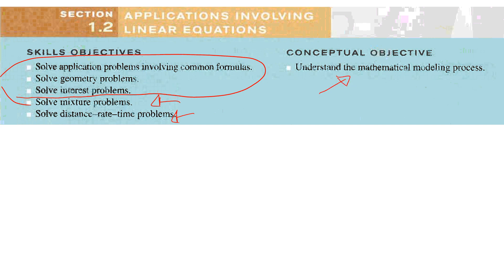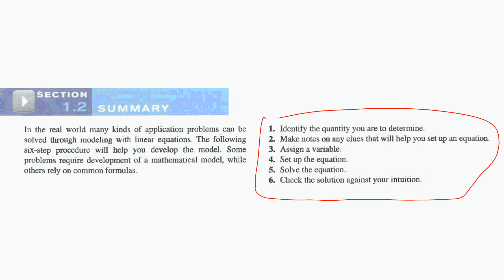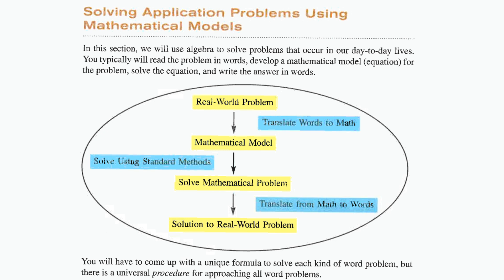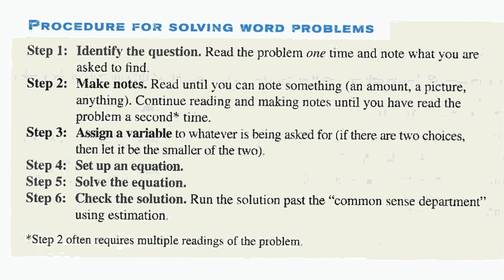We're going to focus on the mathematical modeling process. These six steps are the key. We start with the actual problem and go in two directions: first, words that we translate into math to form a mathematical model — something like an equation: 5x + 25 = 100. We solve that, then turn our math back into words. Words to math, math to words — those are our overriding steps.